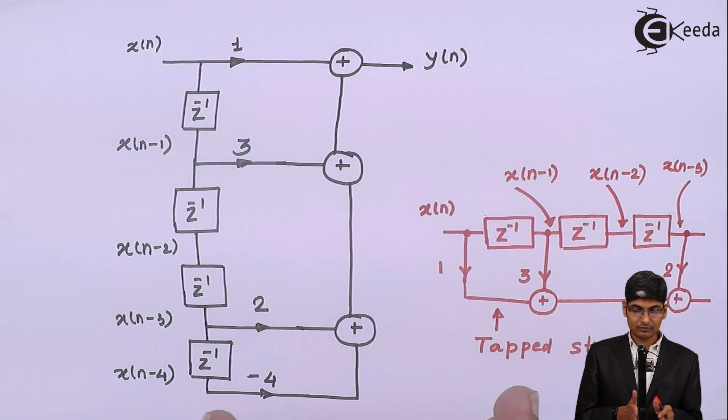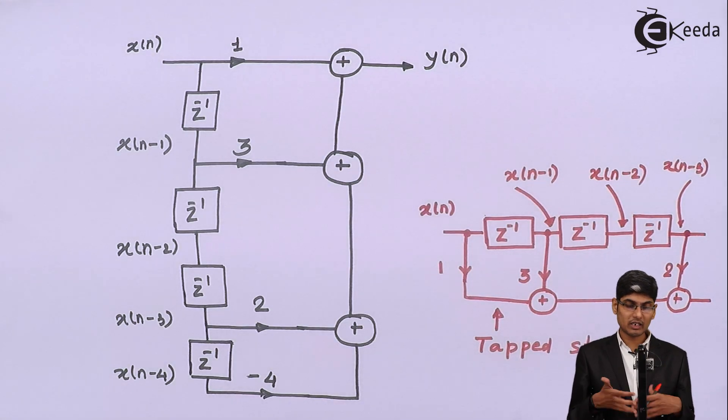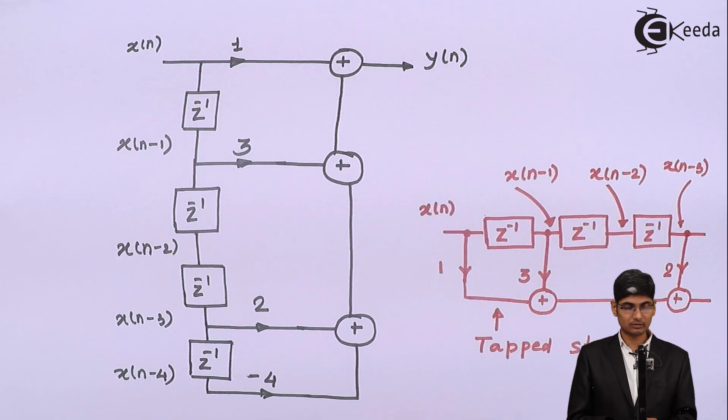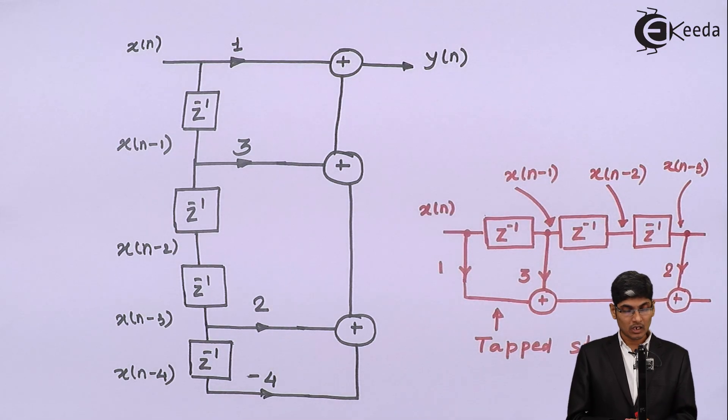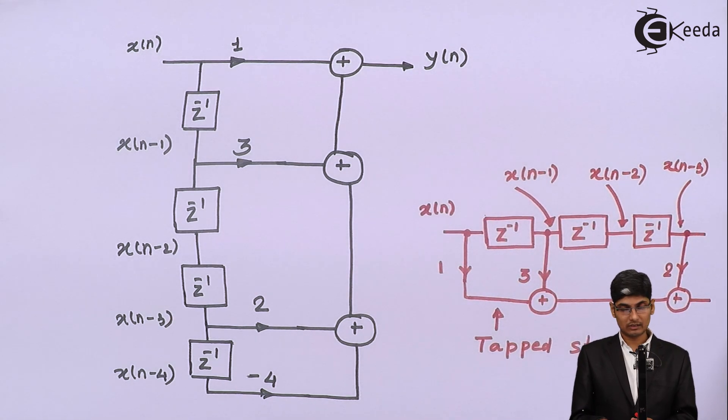There is nothing basic difference between this and this. This is just a way of representation. Normally, when people make an FIR filter, they normally use this structure. It does not make harm if you make this kind of structure, there is nothing wrong in that. But people prefer to use this type of structures when they are designing FIR filters.